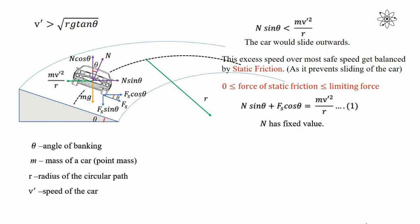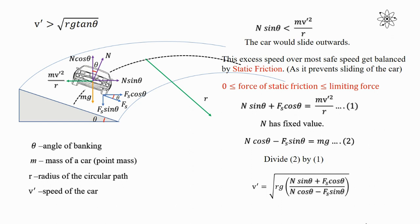Since N has a fixed value, as the N sin theta component increases, the N cos theta component decreases. Therefore: N cos theta − fs sin theta = mg. Dividing, we get v' = √[ rg · (N sin theta + fs cos theta) / (N cos theta − fs sin theta) ].